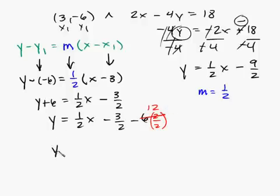So my final answer will be y is equal to 1 half x minus, and I subtracted on both, so that means I'm going to be adding negative 3 and negative 12, which will be negative 15, and that's over 2. And this is my final answer.